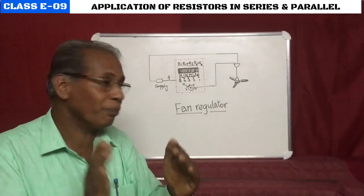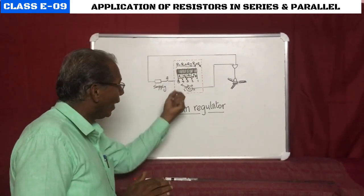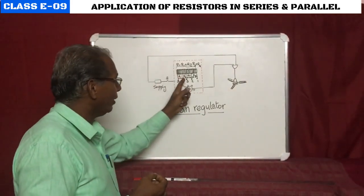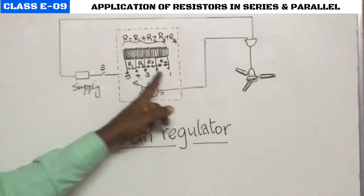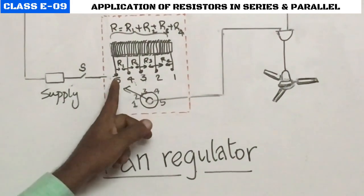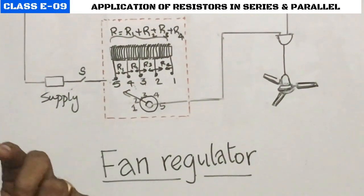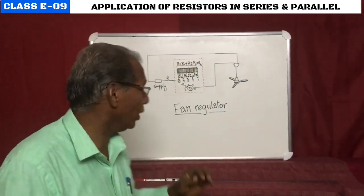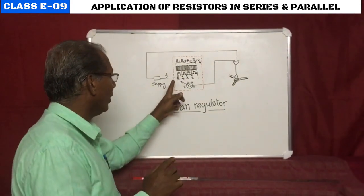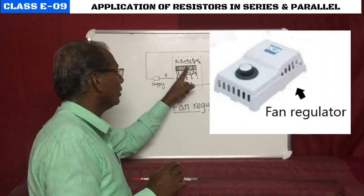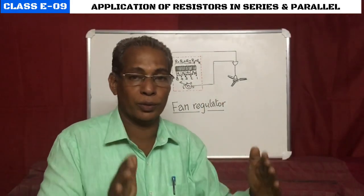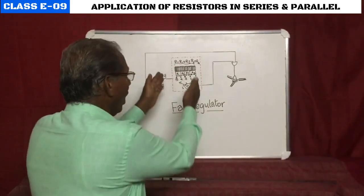After some number of turns we take the wire out — this is called tapping. After each set of turns we take out a terminal, and like that we have five points. Points one and five are the end points of the wire, and in between we have intermediate terminals. Taking terminals five and four gives one value of resistance R1. Taking four and three gives another resistance. In the fan regulator these resistances are added cumulatively.